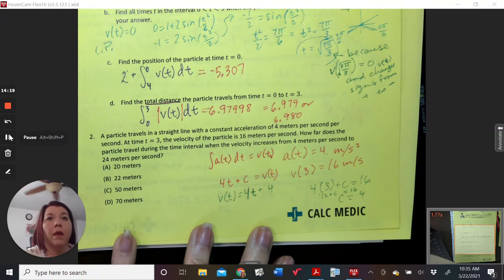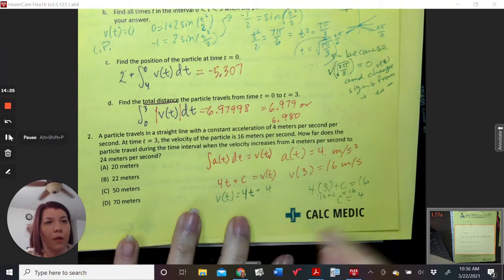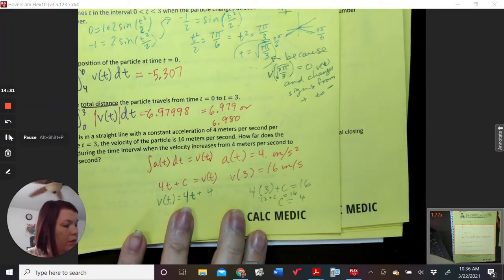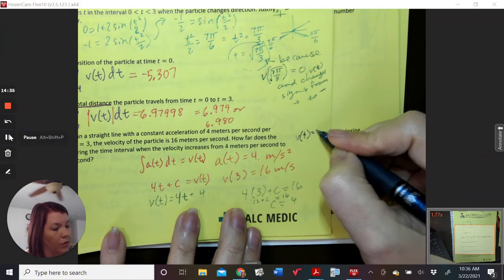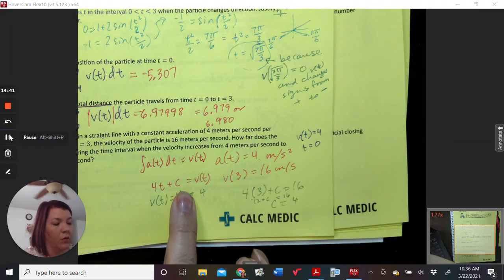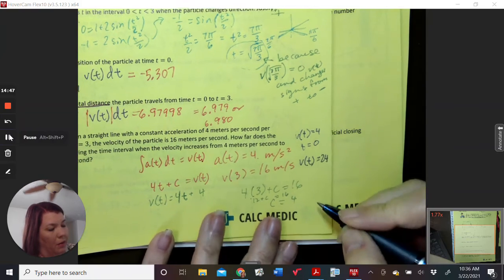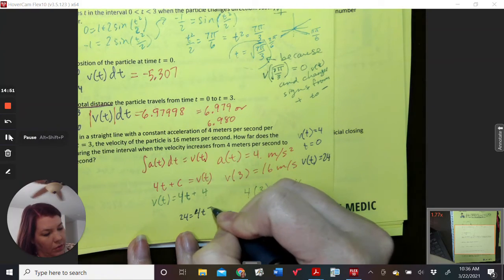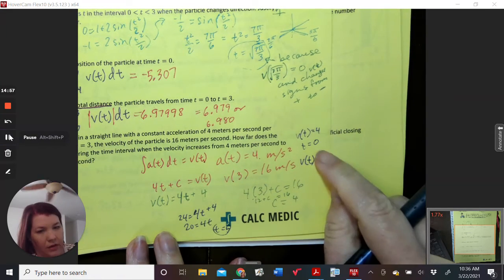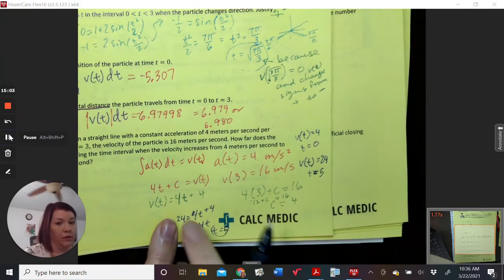And we want to know the time interval when the velocity increases from 4 to 24. So what we are looking for is V of t equals 4 when t is 0, because that would be 4. So we also need V of t is 24, and so that one I might want to do the math. So 24 equals 4t plus 4, so 20 equals 4t, and t is 5. That one was easier, I could do that in my head, but not this. But if you are wondering, I did do this math in my head for this.